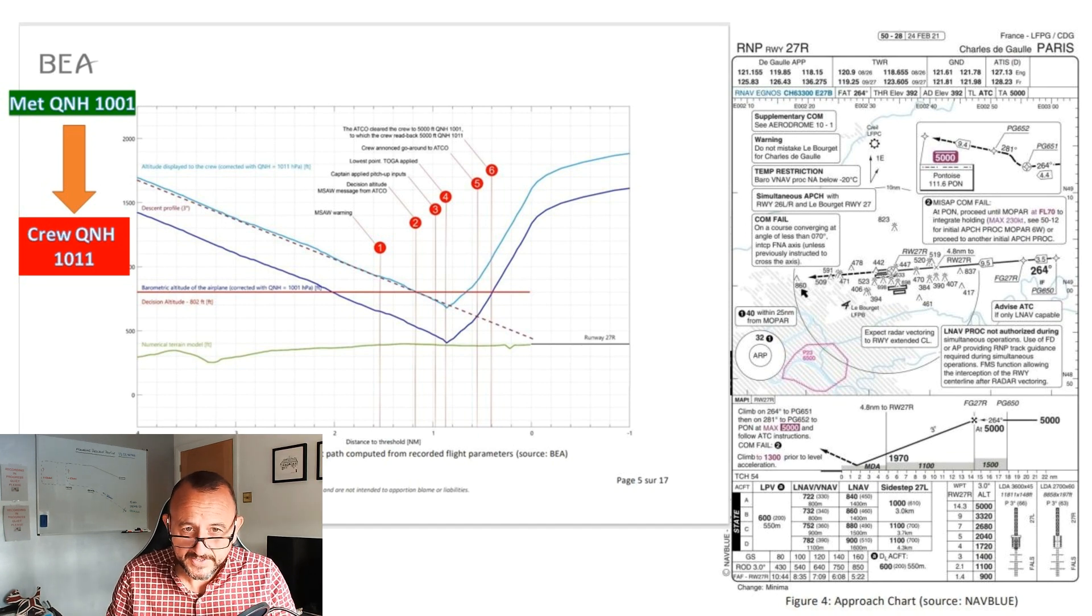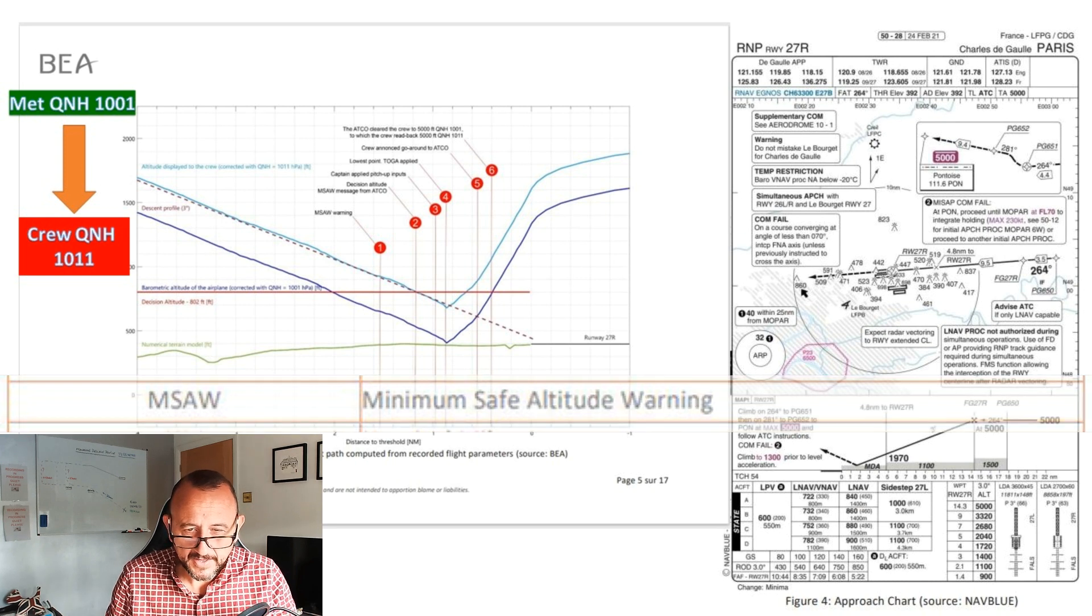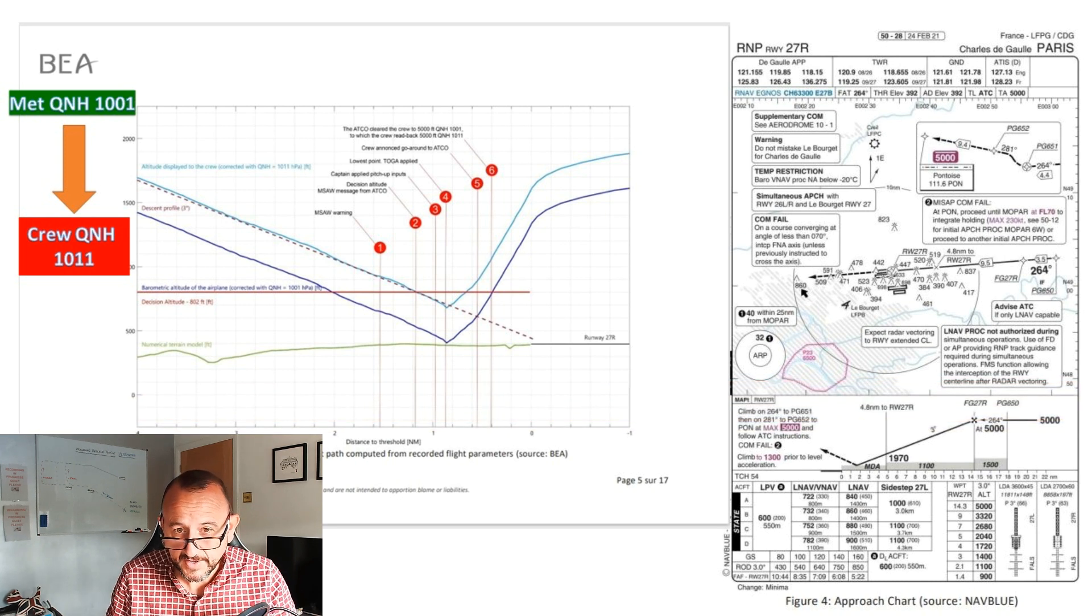I'll just give you a moment to have a look at that. There's a note here about an MSAW warning which goes off in the tower that was alerted to the air traffic controller at the time about an aircraft that was - not quite the terminology here - too steep a descent or wasn't on the correct trajectory.